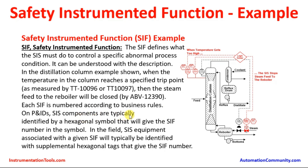On the P&ID, SIS components are typically identified by a hexagonal symbol that shows the SIF number. Seeing this SIF number in a hexagonal symbol is the identification for the safety instrumented function. These temperature elements belong to the safety instrumented system and carry a SIF number. Similarly, the emergency block valve also belongs to the SIS and carries the same SIF number. In a process plant, there are several thousands of sensors, valves, and other measurement elements, so each has to be identified separately.